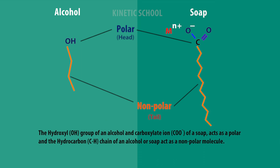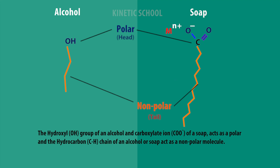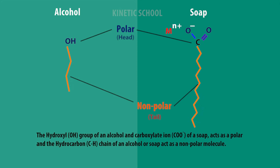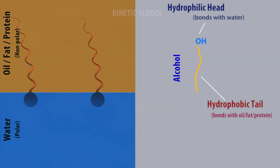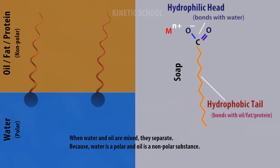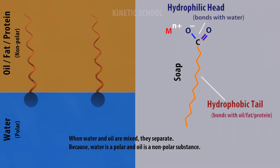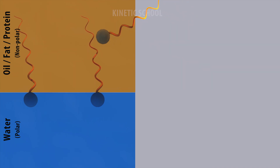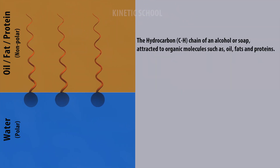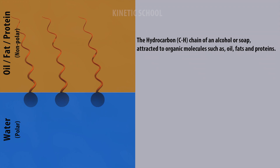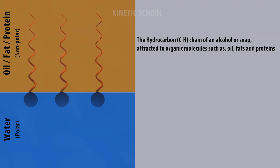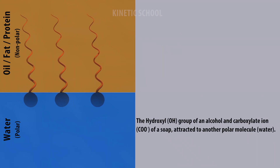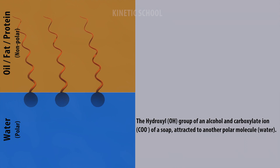The hydroxyl group of an alcohol and the carboxylate of soap act as polar ends, while the hydrocarbon chain of an alcohol or soap acts as a non-polar molecule. When water and oil are mixed, they separate because water is polar and oil is non-polar. The hydrocarbon chain of an alcohol is attracted to organic molecules such as oil, fats, and proteins, while the hydroxyl group of an alcohol and the carboxylate of soap are attracted to other polar molecules like water.